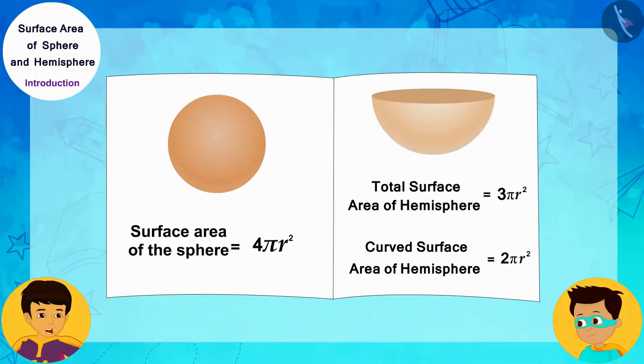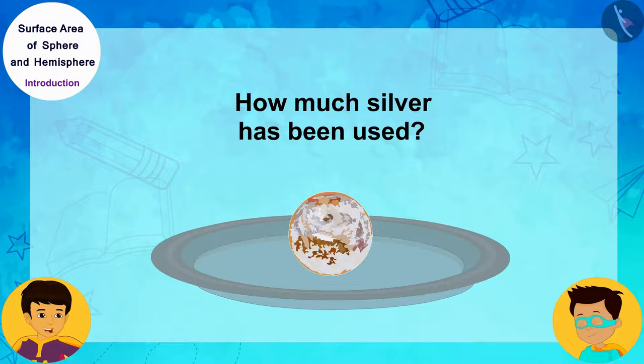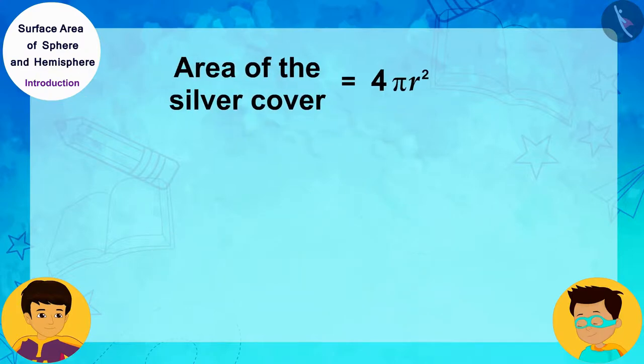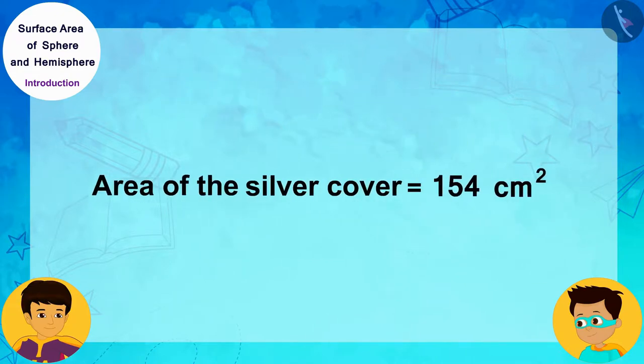You forgot all about your original question in the whole sphere and hemisphere discussion. Come on! Now quickly find out how much silver has been used to cover this spherical sweet. Oh yes, I will solve this quickly by writing the radius of the spherical sweet, 3.5 cm, instead of R in the formula for the surface area of this sphere. Look! This spherical sweet has been covered with 154 square cm of silver.